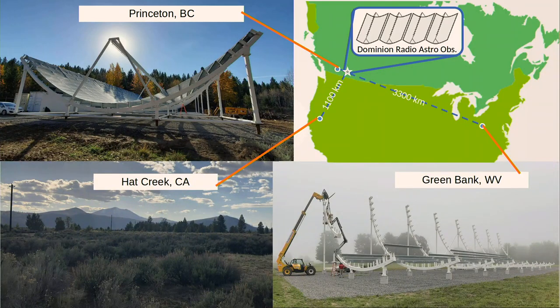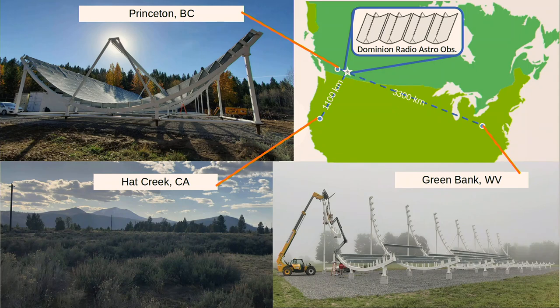The plan is to build three outrigger telescopes. These photos show a recent build stage of each site. The first telescope is in the town of Princeton, British Columbia, about 65 kilometers from CHIME — all the digital hardware has been installed and we're getting data from that. Green Bank, West Virginia, has now been built and is awaiting digital hardware installation. The last site in Hat Creek, California, has yet to break ground but we're still negotiating contracts with builders to make the foundation. The hope is that all three will be operating and collecting data and doing localization by next year, certainly by this time next year.